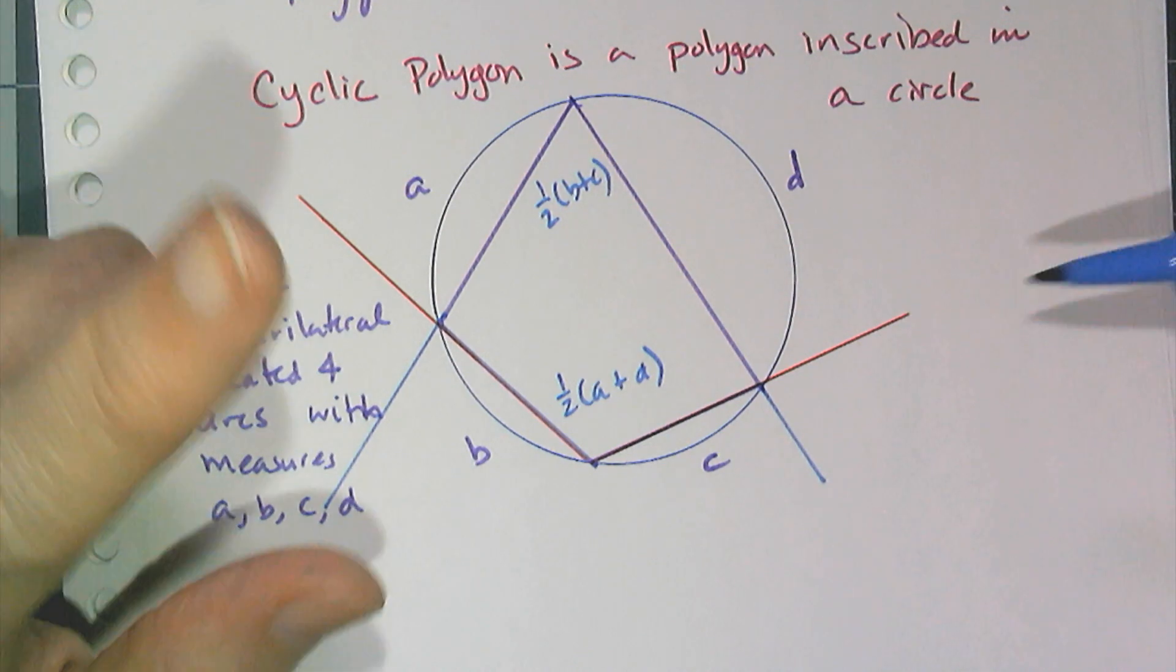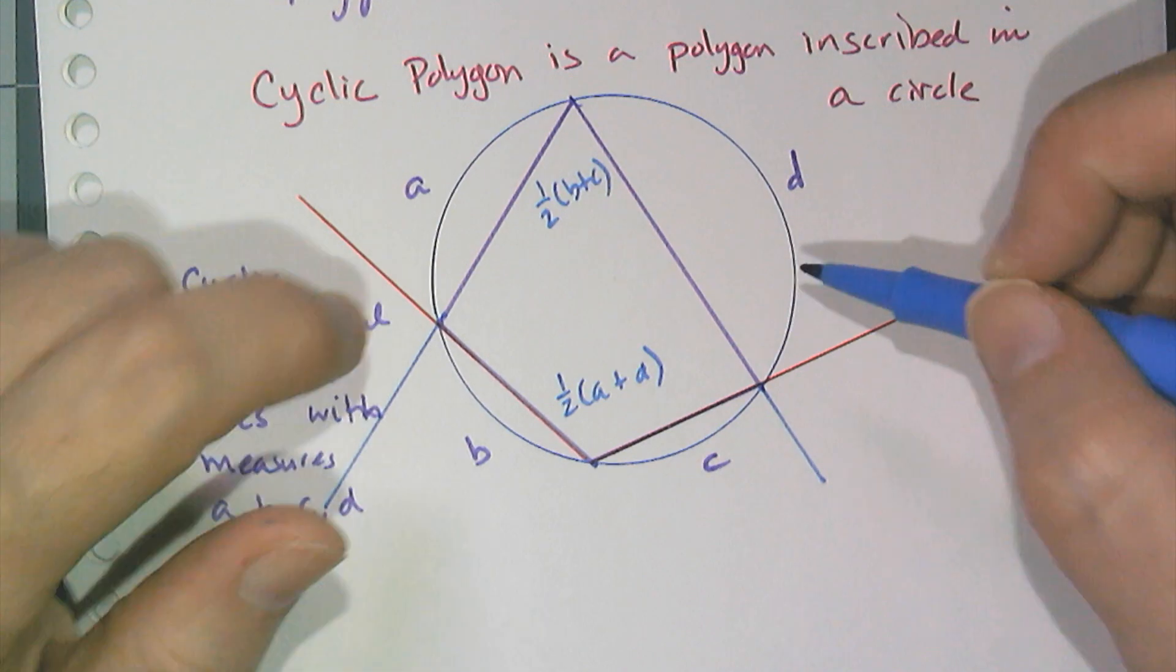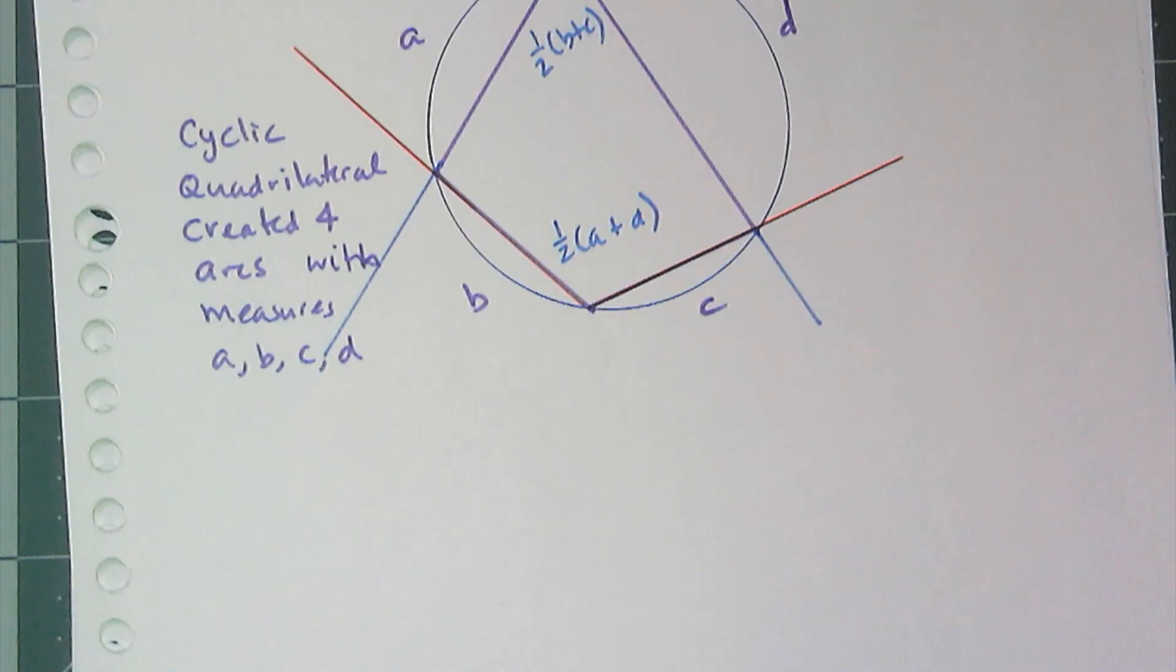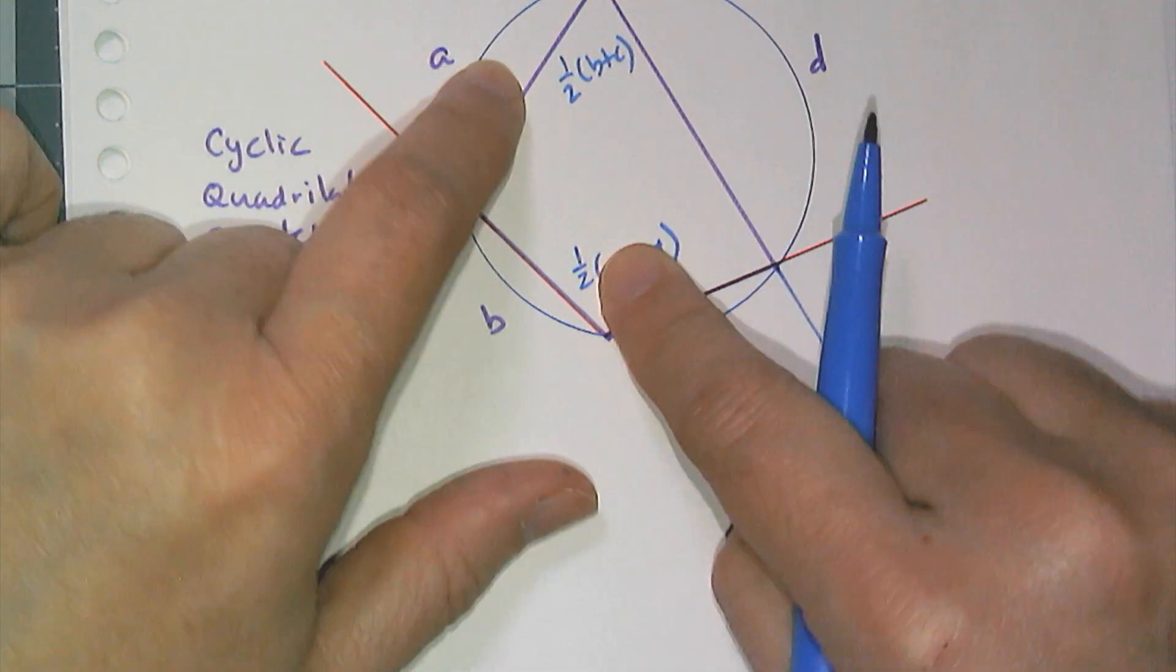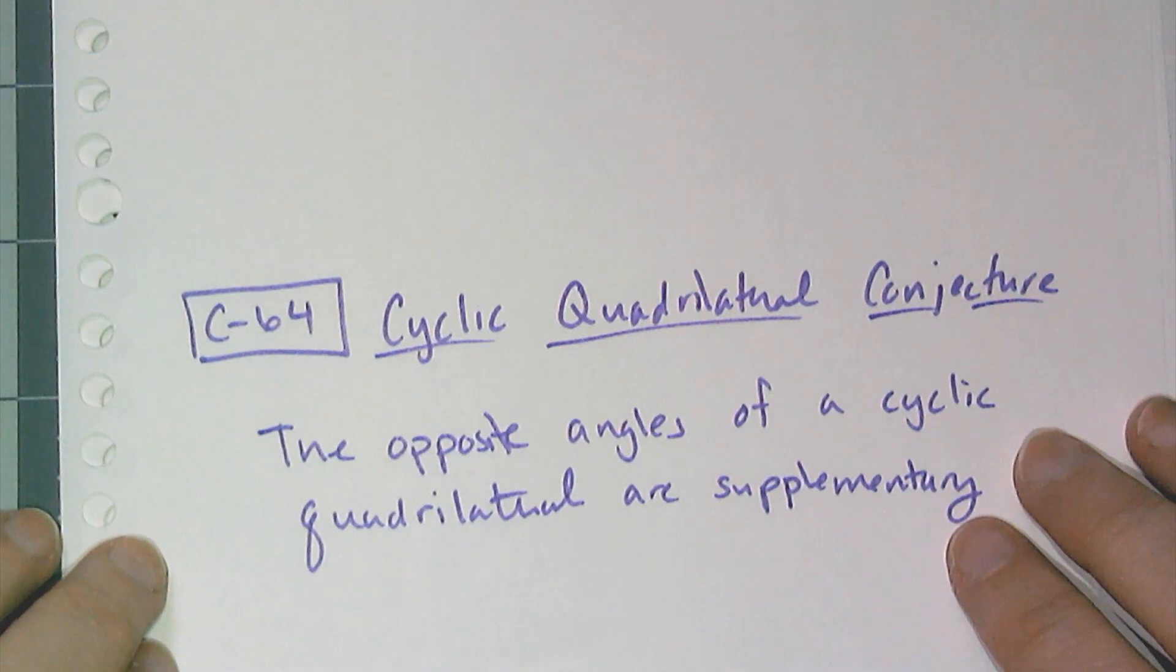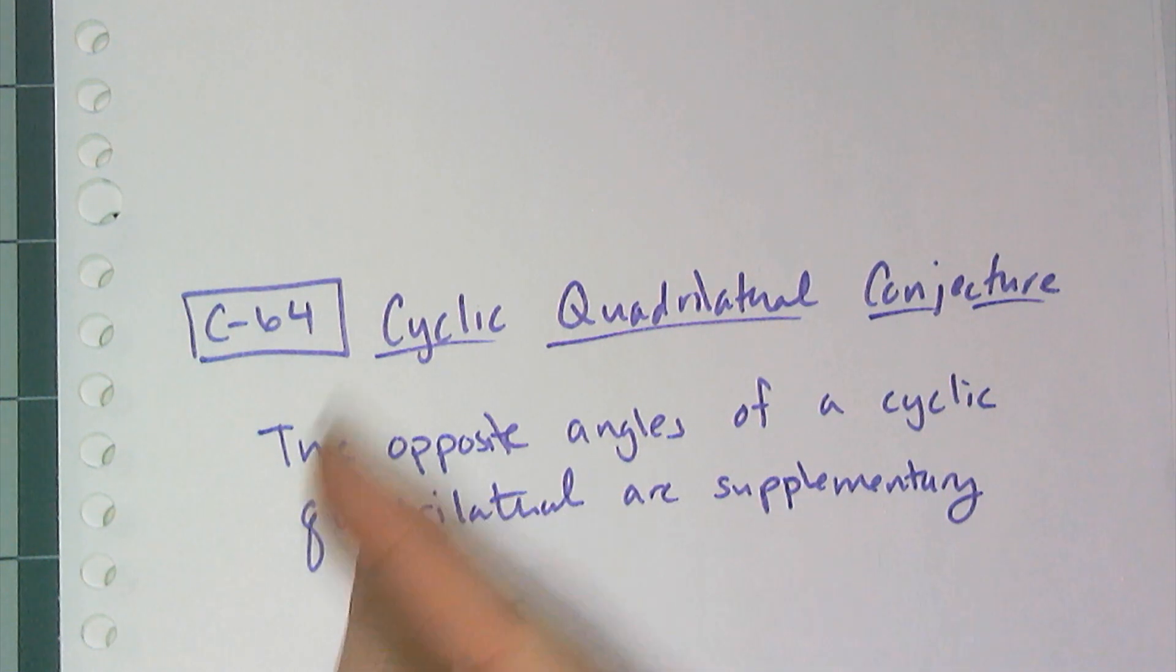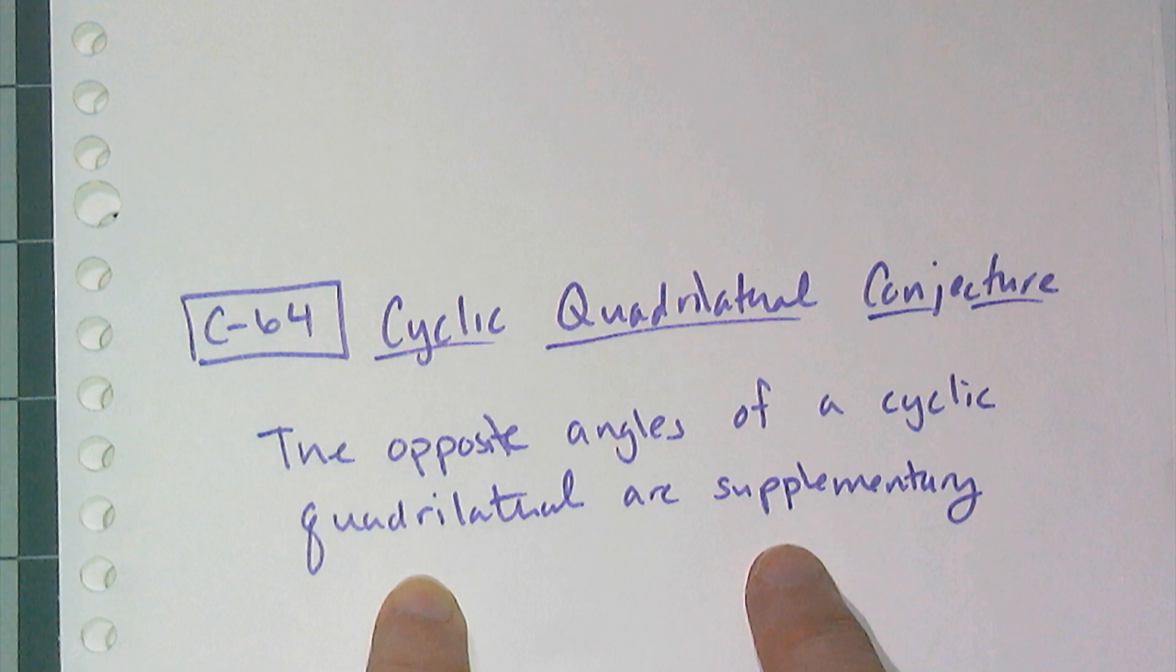So that means if I have a cyclic quadrilateral, the opposite angles have to be supplementary. So the special property of a cyclic quadrilateral is conjecture C64. The opposite angles of a cyclic quadrilateral are supplementary.